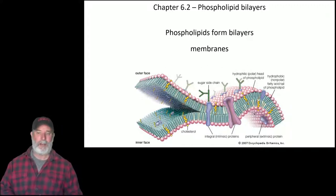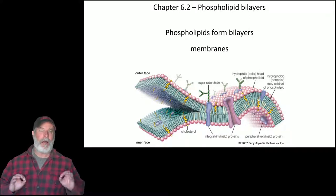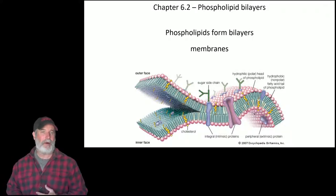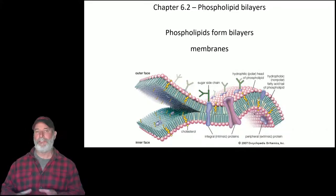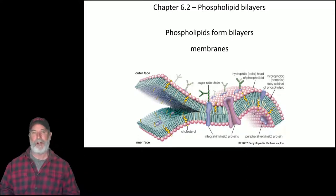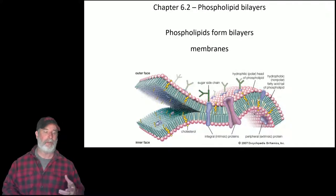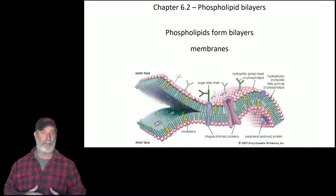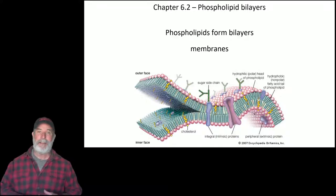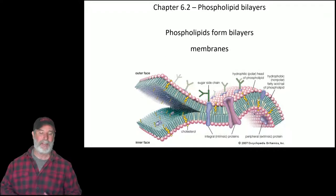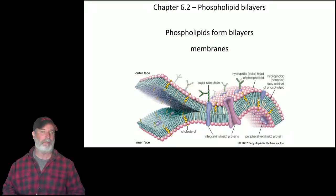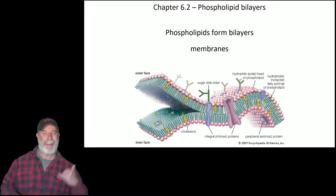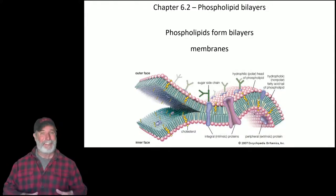Today we want to talk about membranes — the structure and function of membranes — then diffusion and osmosis, and after that transport processes like active transport through pumps and co-transporters. Some of this material is not in this chapter; it's in later chapters, so I'm going to prime you for plant and animal form and function.